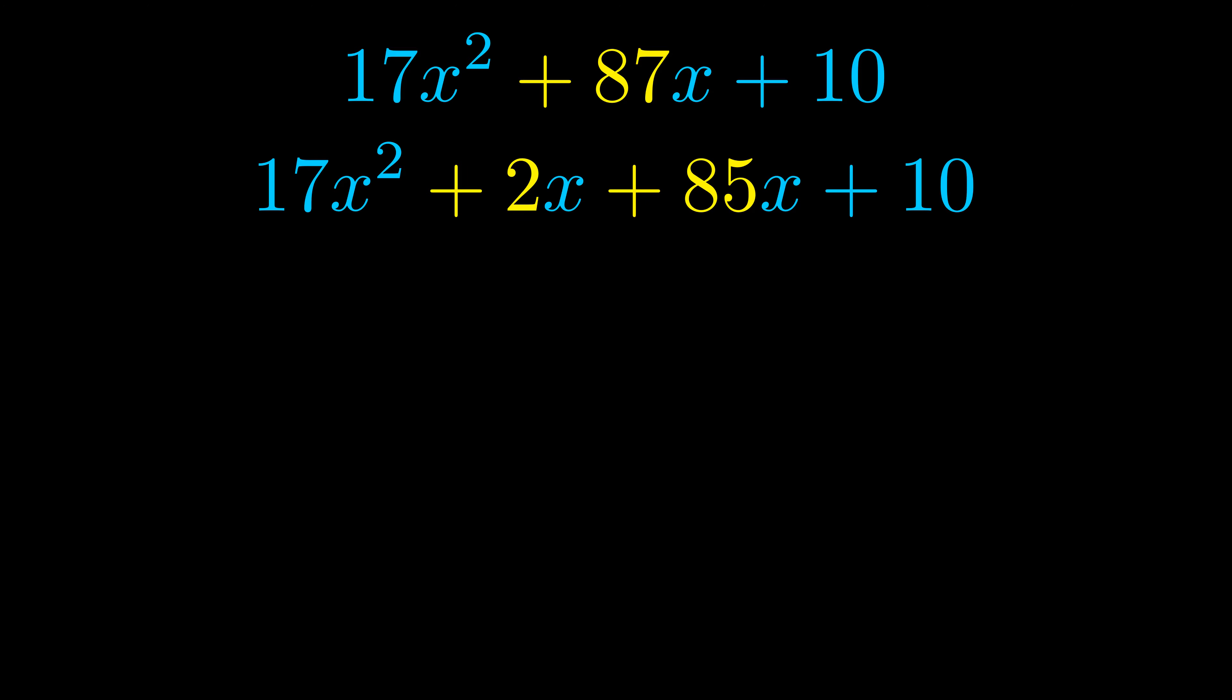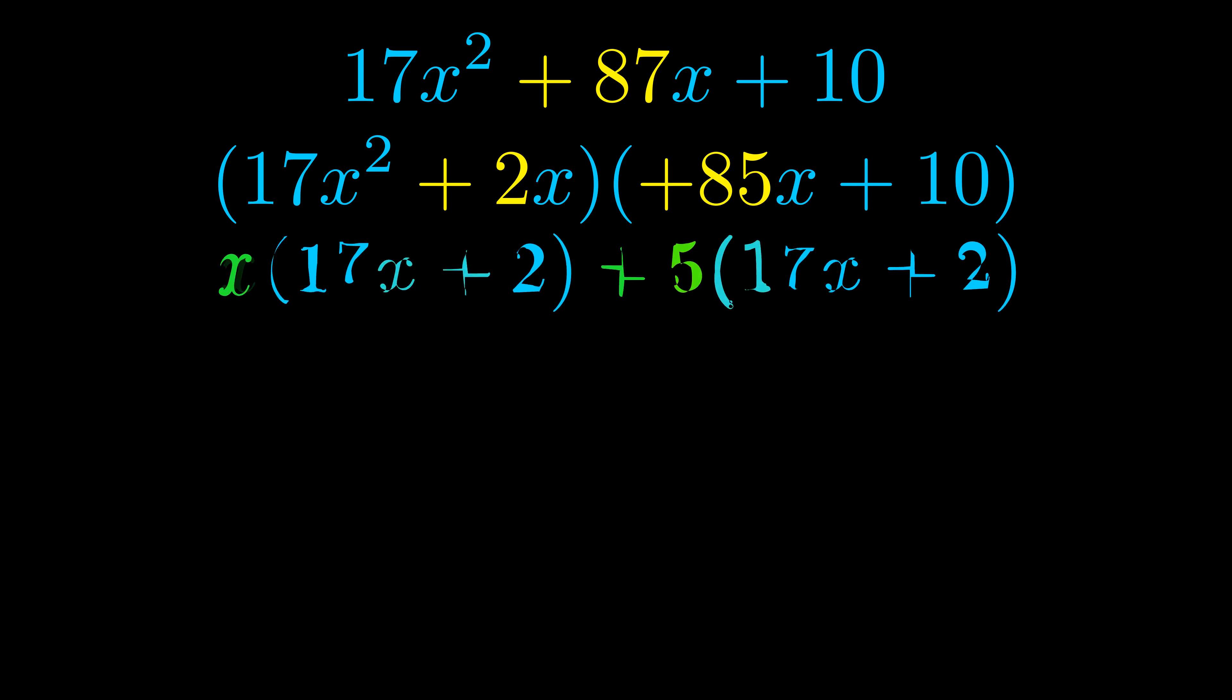Once we've done this, we put parentheses around the first term and the last term, and we do that so we can take the greatest common factor out of both terms. We can see the greatest common factor is now outside in green.